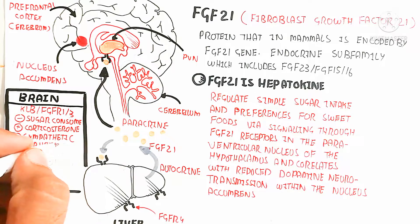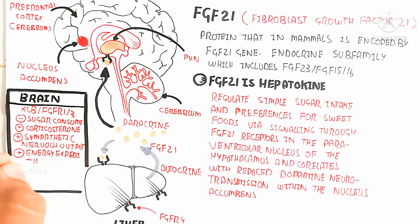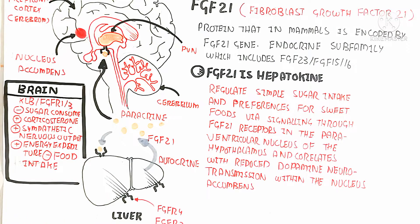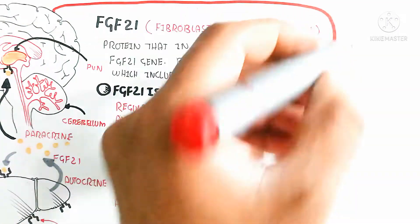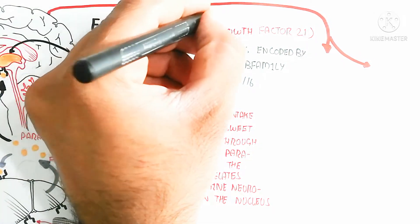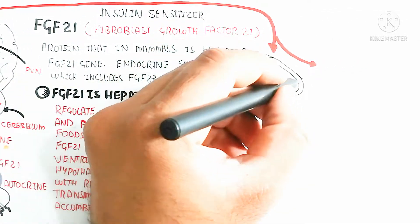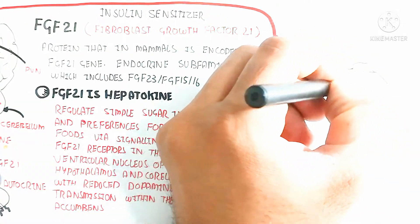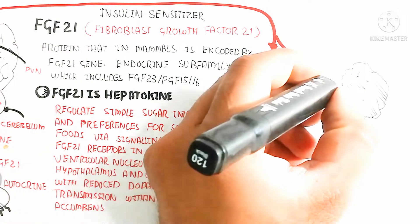The brain contains KLB receptor and FGF receptors one and three. After low sugar consumption, corticosterone increases, sympathetic nervous system output increases, energy expenditure increases, and food intake decreases — so appetite suppression is increased, meaning we will not feel hungry. This brain signaling leads to binding with the paraventricular nucleus, producing norepinephrine, which enters the blood circulatory system.